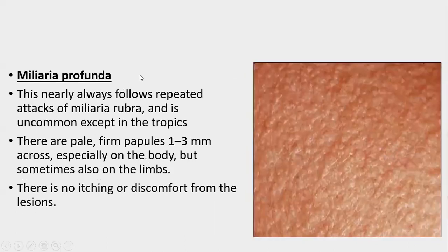Miliaria profunda nearly always follows repeated attacks of miliaria rubra and is uncommon except in the tropics. It is characterized by pale, firm papules 1 to 3 mm across, especially on the body but sometimes seen on the limbs. There is no itching or discomfort from the lesions.